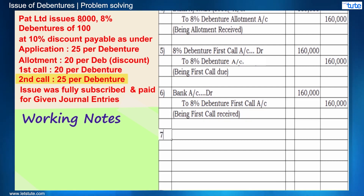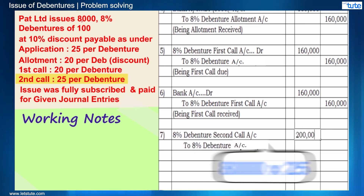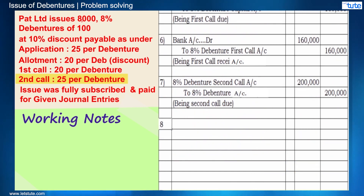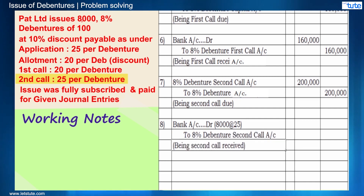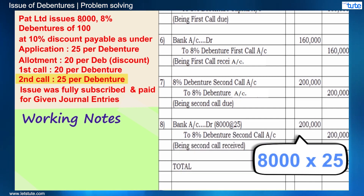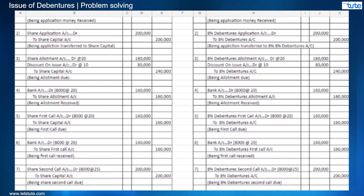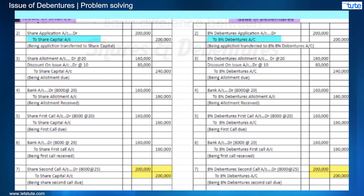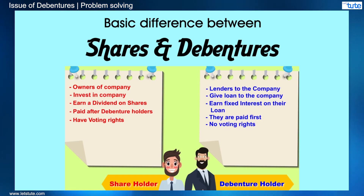Similarly, the entry for the second call due and then received. As you can see, the entries look the same as those in company accounts issue of shares. Only the word shares is replaced with debentures.